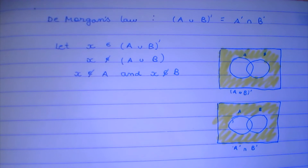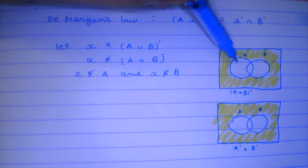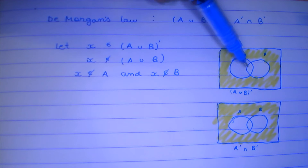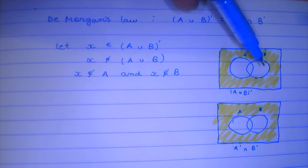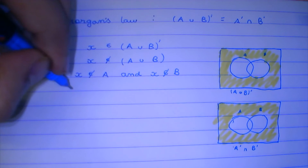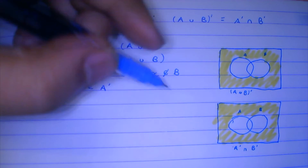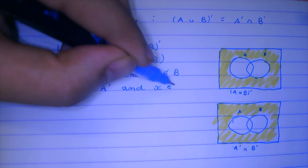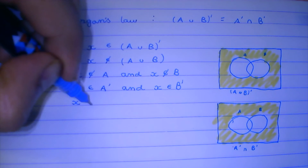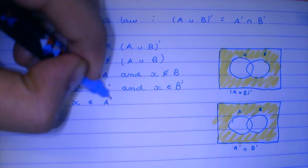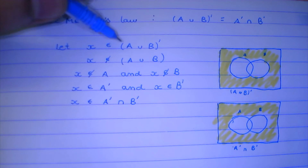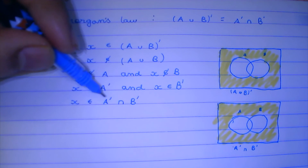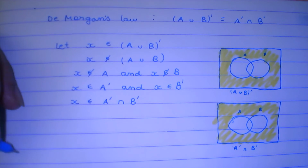You might be thinking that an 'or' will come here, but if you think carefully, x does not have to belong to A union B, so x cannot belong to A and it cannot belong to B. If we put an 'or' there it will only represent the middle area. So x cannot belong to A and x cannot belong to B, which simplifies to x belongs to A complement and x belongs to B complement, meaning x belongs to A complement intersection B complement. Hence the law is proved.